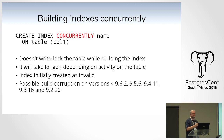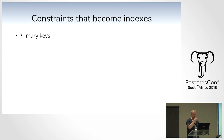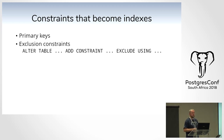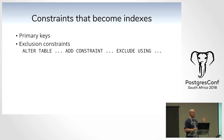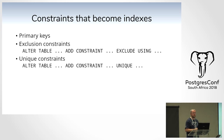Constraints that become indexes: the most obvious is a primary key — declaring a primary key on a table implicitly creates an index. Exclusion constraints: ALTER TABLE ADD CONSTRAINT EXCLUDE USING also builds an index, and you can specify the type — sometimes you want a GiST or GIN because you're using ranges. Unique constraints also build an implicit index. This raises the question: why have both unique constraints and unique indexes? They are functionally similar — a unique constraint creates a unique index in the background.